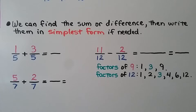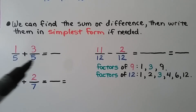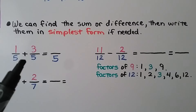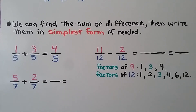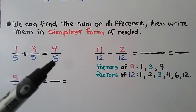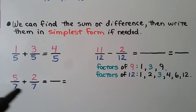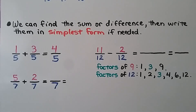We can find the sum or difference and then write it in simplest form if needed. We have one-fifth plus three-fifths: same denominator, so the answer has a five for a denominator. We just add the numerators — one plus three equals four, so one-fifth plus three-fifths equals four-fifths. Here we have five-sevenths plus two-sevenths: same denominator, so our answer will have a seven for a denominator. Five plus two equals seven.